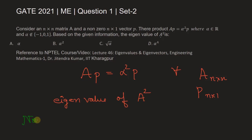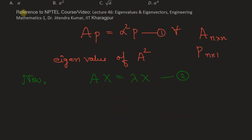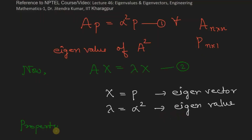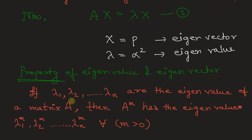From the definition of eigenvalue and eigenvector, we have Ax = λx, where x is the eigenvector and λ is the eigenvalue. Comparing this with the given equation Ap = α²p, we can write that x equals p and λ equals α². This means p is the eigenvector and α² is the eigenvalue of A.